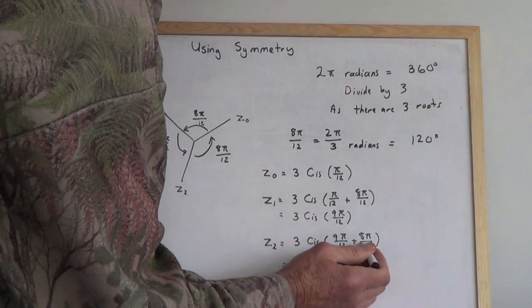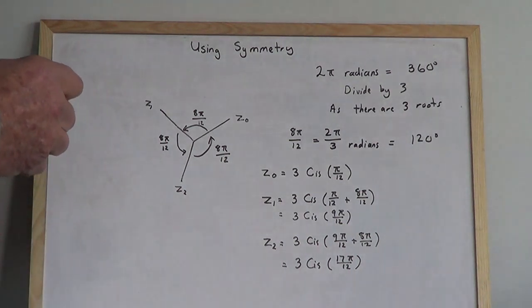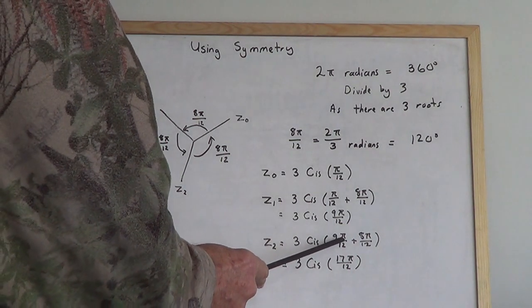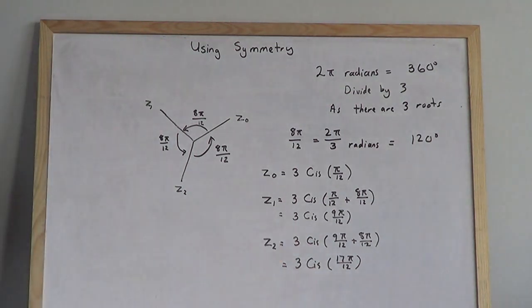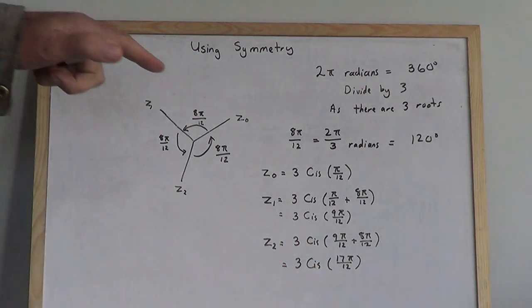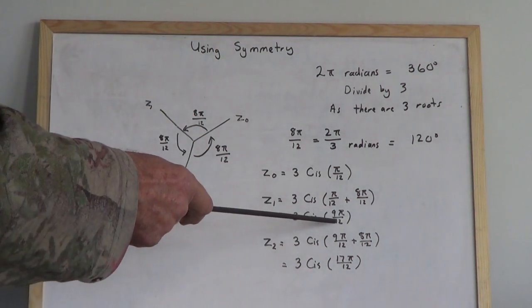So we do 9π/12 plus 8π/12, and we get 17π/12. If you want, you could simplify that down to -7π/12. But there are your answers—very simple, very straightforward, and we're done.